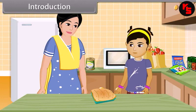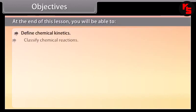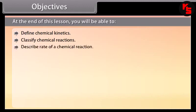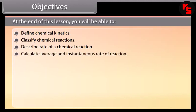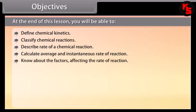Students, today we will discuss more about chemical kinetics. At the end of this lesson, you will be able to: define chemical kinetics, classify chemical reactions, describe rate of a chemical reaction, calculate average and instantaneous rate of reaction, and know about the factors affecting the rate of reaction.